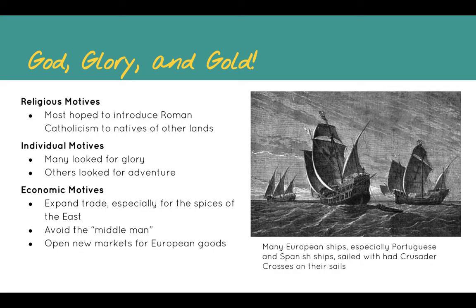Cortez, of course, before Pizarro conquered the Aztecs. And lastly, economic motives: they wanted to expand trade, especially for spices in the East, and in doing that they wanted to avoid the middleman. They didn't want to trade for goods from India through someone in the Middle East because that meant paying higher prices. If they could bypass that middleman it would be much cheaper. They also wanted to open new markets for European goods, and lastly, they wanted to find silver and gold.